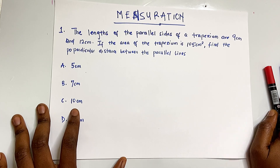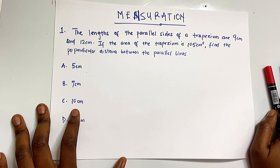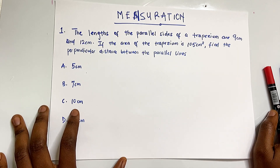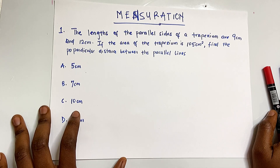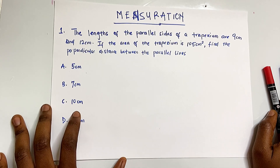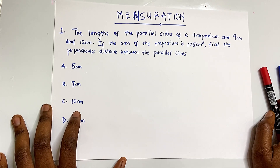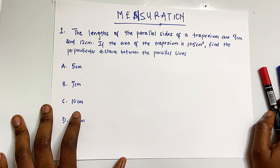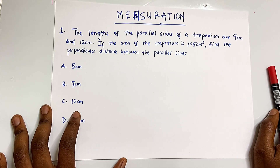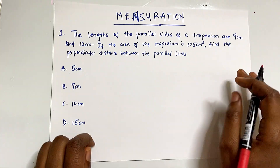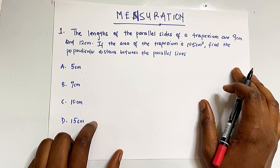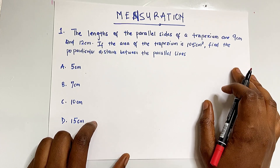We have a few questions to tackle, so let's get straight into it. Question number one says: the length of the parallel sides of a trapezium are 9 centimeters and 12 centimeters. If the area of the trapezium is 105 centimeters squared, find the perpendicular distance between the parallel lines. Let's start by sketching out a trapezium and labeling it with the parameters given.